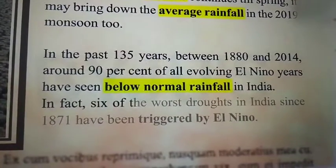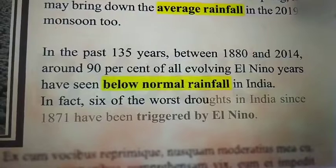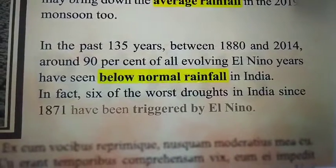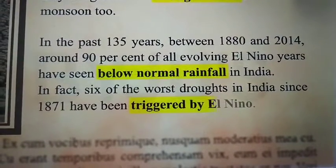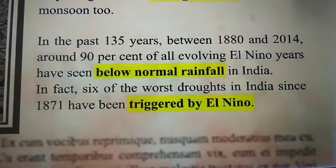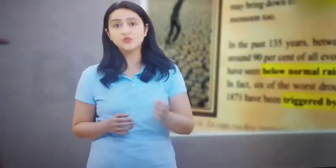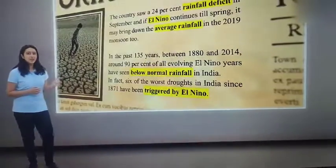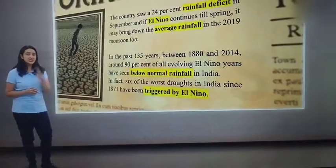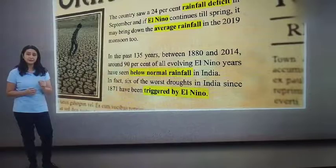In fact, 6 of the worst droughts in India since 1871 have been triggered by El Niño. That sounds grim. In a country like India where many farmers depend on monsoon rainfall, something like this seems so scary.